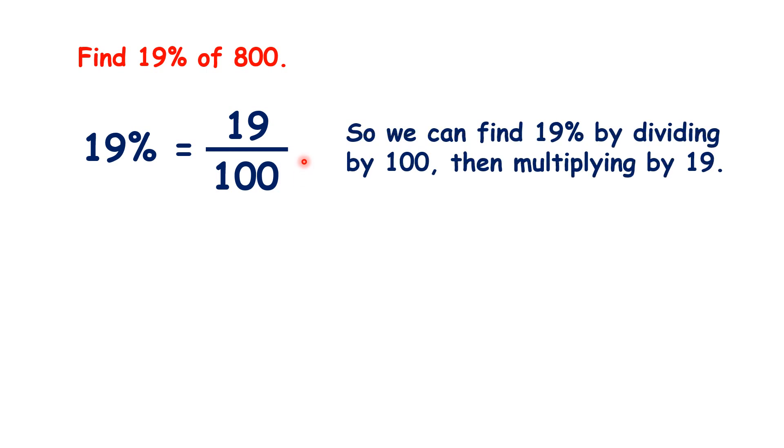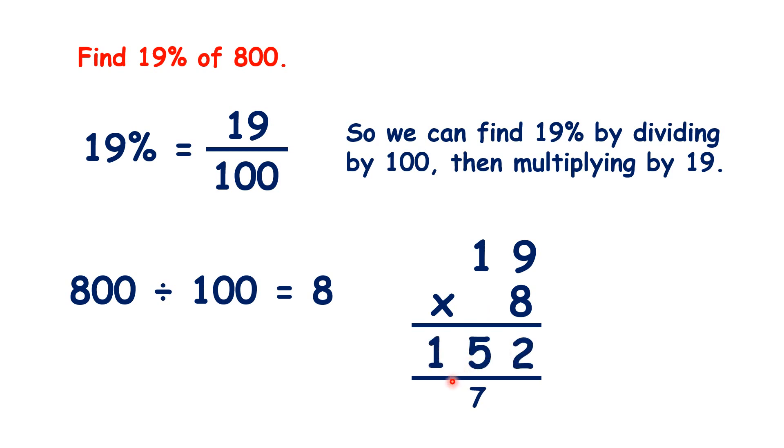So now pause the video and see if you can find 19% of 800. 19% is 19 hundredths as a fraction, and though we can't simplify 19 hundredths, we can find 19% by dividing by 100, then multiplying by 19. So dividing by 100 gives us 8, and then multiplying 19 by 8 gives us our answer, which is 152.